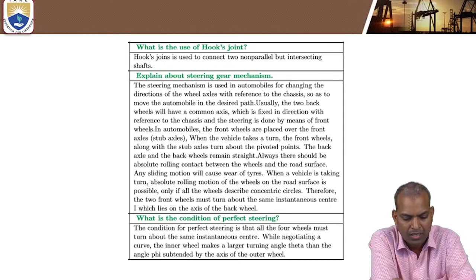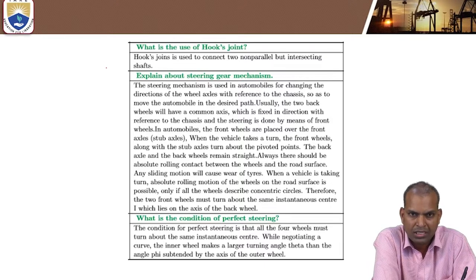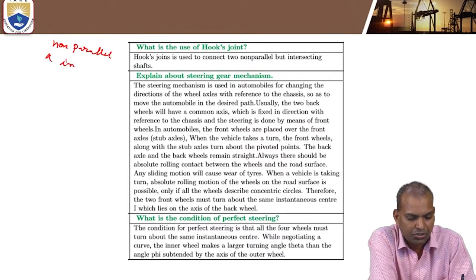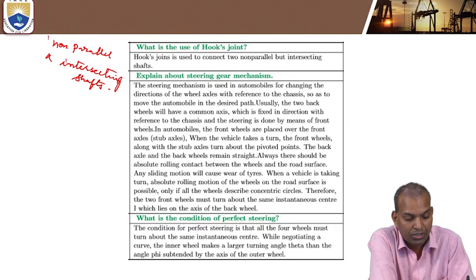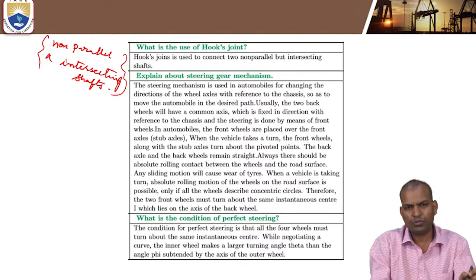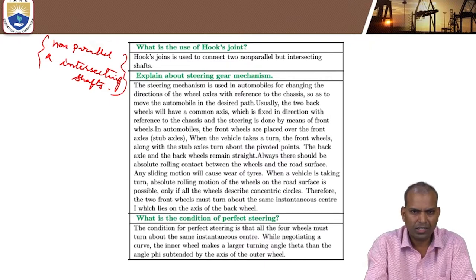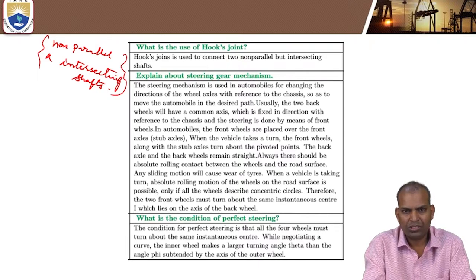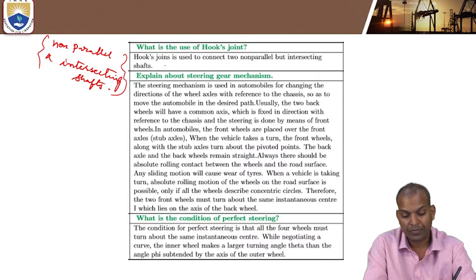The next definition is Hooke's joint. Hooke's joints are used to connect non-parallel and intersecting shafts. These joints are especially useful in trains and locomotive vehicles joined between two coaches. When the local train is moving over heavy hills, non-parallel and intersecting shaft motion takes place, and these Hooke's joints are used.